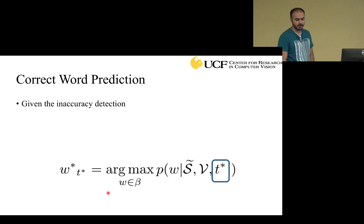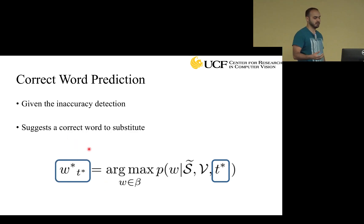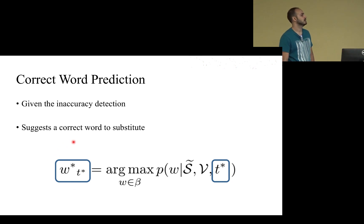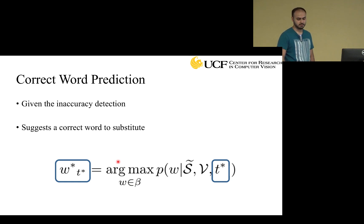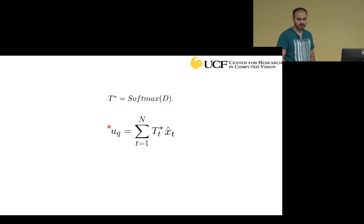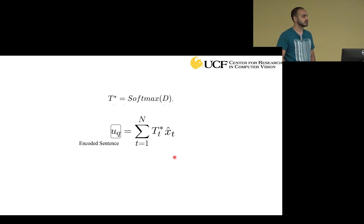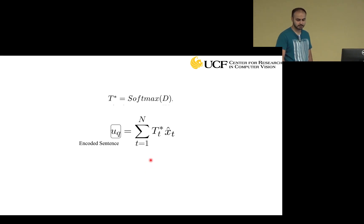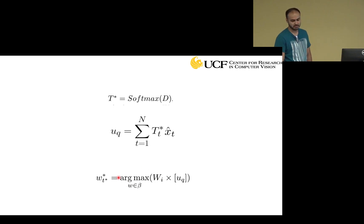Given the inaccuracy detection result t-star, our correct word prediction module suggests a correct word from the dictionary. If our dictionary is beta, it is basically a classifier over all the words in the dictionary. Given the detection scores, we apply a softmax to get probabilities, and use a weighted average over the encoded word vectors x-t to encode the sentence into one vector U-Q based on the inaccuracy probabilities. A simple classifier on U-Q then gives the suggested correct word.